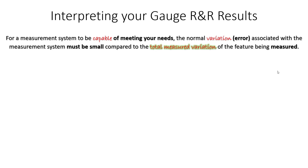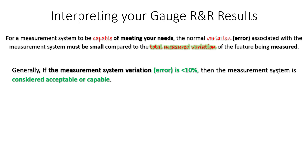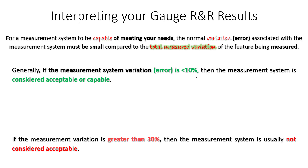Now let's talk about how to interpret your results. No matter which method you use, the interpretation is the same. In an ideal world, your measurement system variation should be small. Any calculation less than 10% is considered acceptable — no issues, you're good to go. That measurement system variation is small relative to your design tolerance or process variation. On the other end, if that percentage is greater than 30%, the gauge is not acceptable. You have too much measurement system variation and you need to address it.